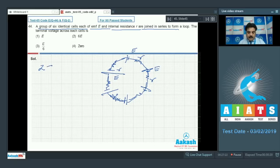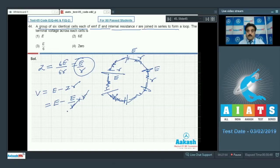For the current, I need net EMF. Since they are in series: net EMF equals 6E, total resistance equals 6R, so I equals E by R. Terminal voltage across any cell is E minus IR equals E minus E by R multiplied by R, which equals E minus E equals 0. The terminal voltage across each cell is 0. Option 4 is correct.